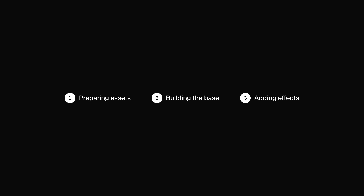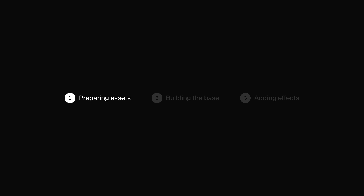I'm going to break this video up into three sections. The first section will be about preparing the assets — grabbing the images we'll need for this interaction. The second section will be about building the base, basically drawing rectangles on a design canvas. The third section will be about adding effects: the gradient blur or progressive blur, and the parallax hover effect.